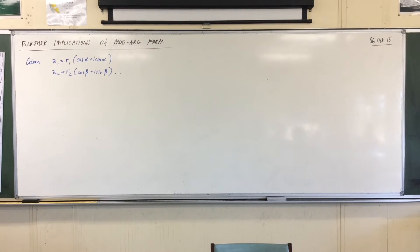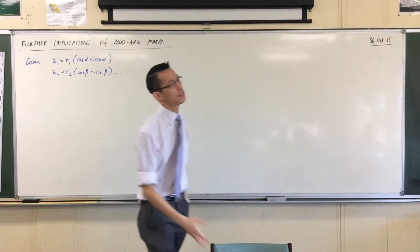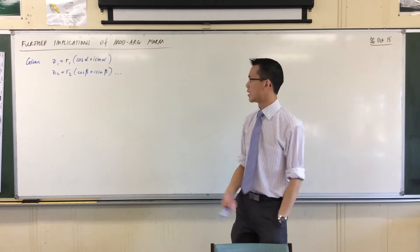Complex numbers start very simple, like adding things and multiplying in terms of each other. When you transition to mod arg form though, things get a lot more difficult for a good reason.